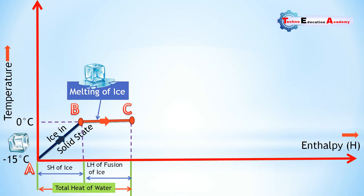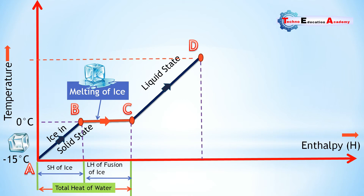The sum of sensible heat of ice and latent heat of fusion of ice is called total heat of water. Further addition of heat after point C increases the temperature of water gradually until it reaches 100 degree Celsius, which is the boiling temperature of water at atmospheric condition. This heating process is represented by line CD on the T-H diagram, and the heat supplied during this process is known as sensible heat of water.